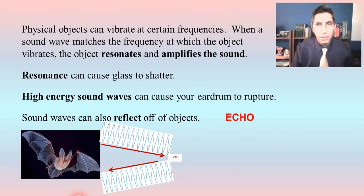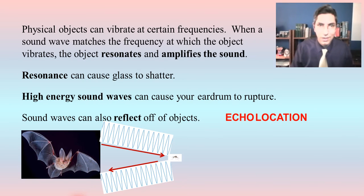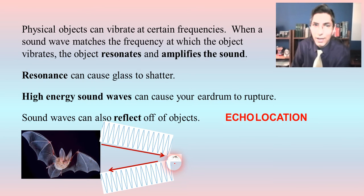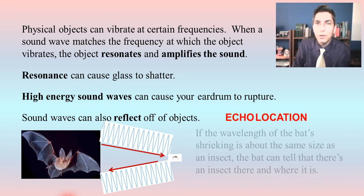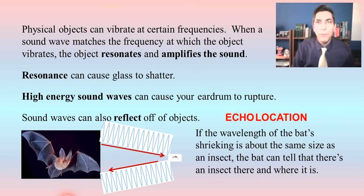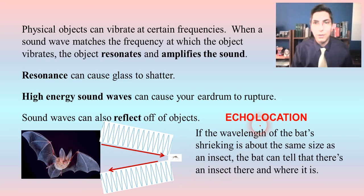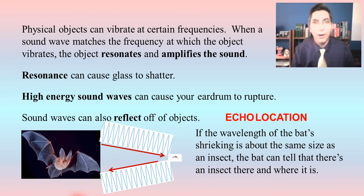What's happening here is a process called echolocation. The sound is essentially echoing off the bug and coming back in the direction of the bat. If the wavelength of the bat's shrieking is about the same size as an insect, the bat can tell that there's an insect there and actually locate it — that's why it's called echolocation. It's kind of like radar, but with sound waves.